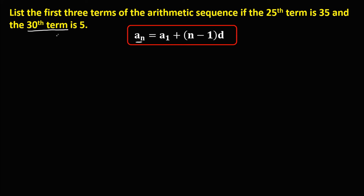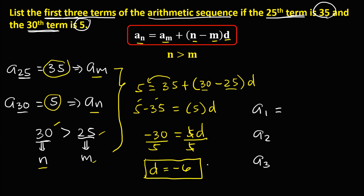Now to find the first three terms — a sub 1, a sub 2, and a sub 3 — we use the standard arithmetic formula. A sub n equals 5 (the last term), n equals 30, a sub 1 is unknown, and the common difference d is negative 6.